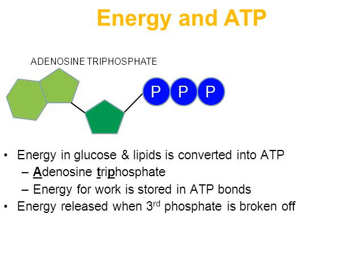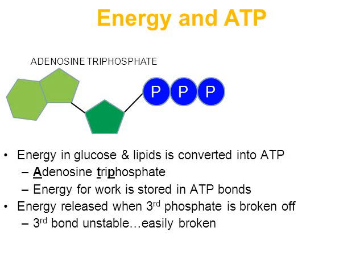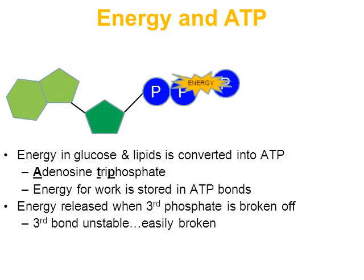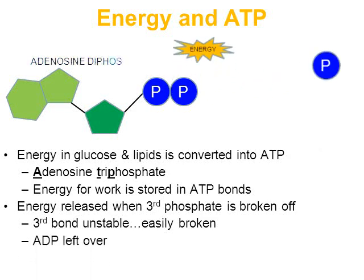Looking at this more simplistic diagram, we can see adenosine triphosphate. The blue P's represent three phosphates stuck together. Energy is released when that third phosphate is broken off. The bond that holds the second to the third phosphate together is fairly unstable and easily broken. When that third phosphate is broken, energy is released.